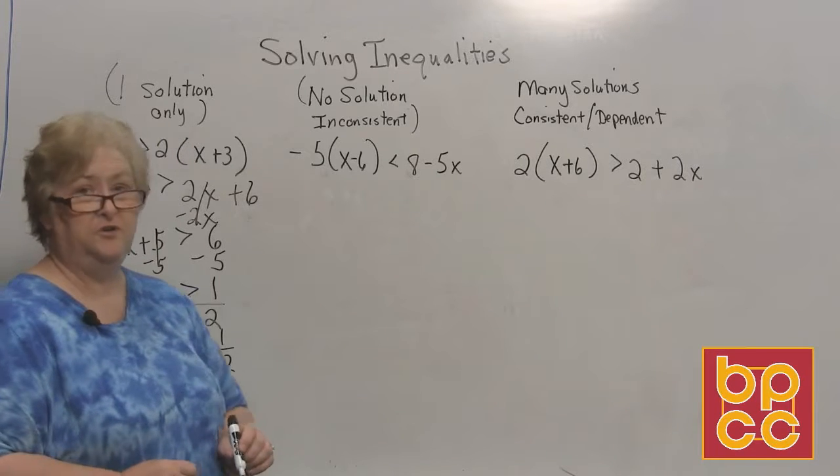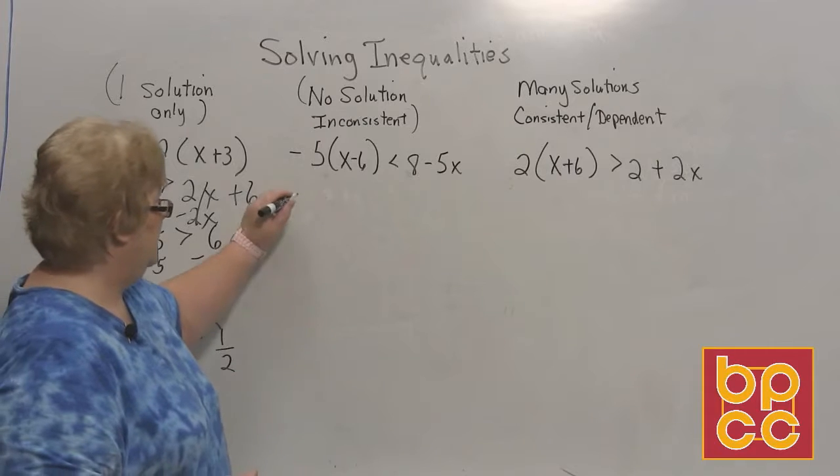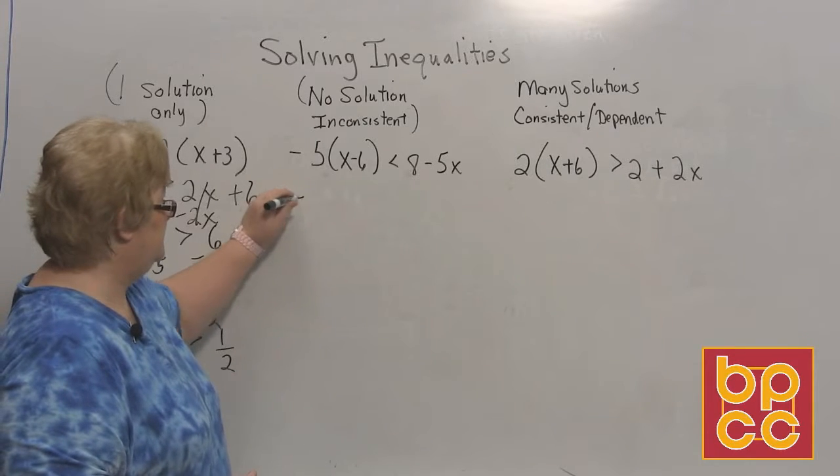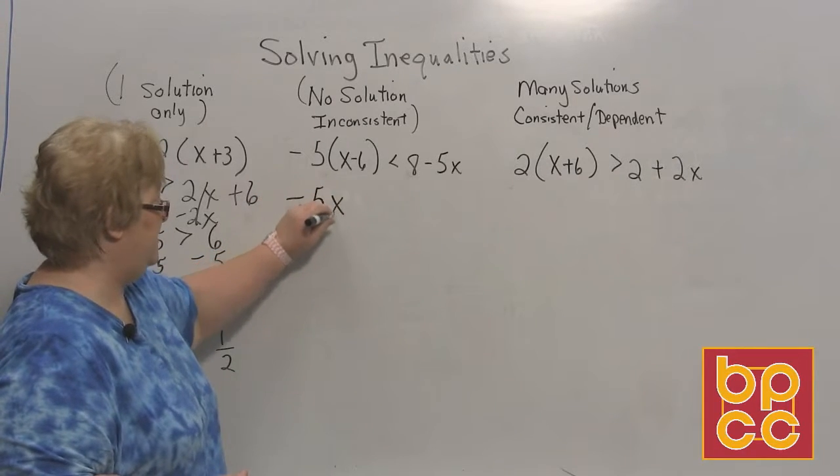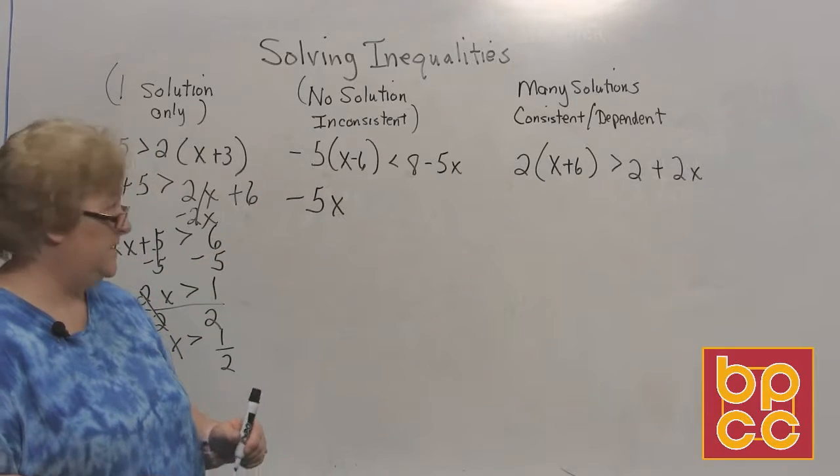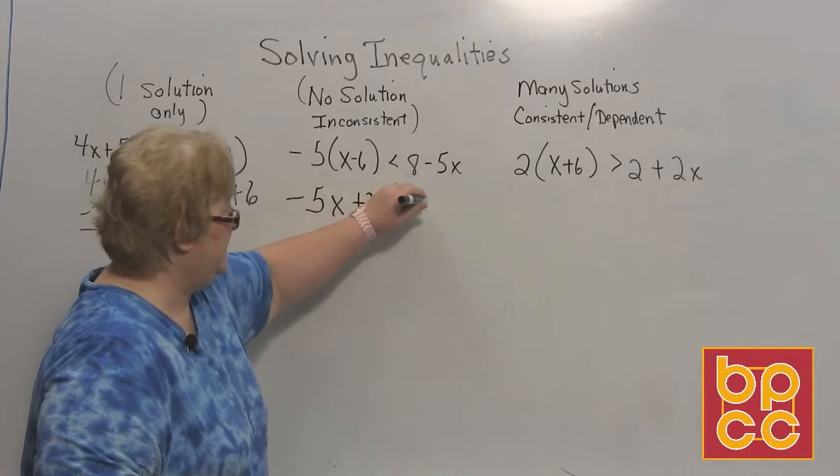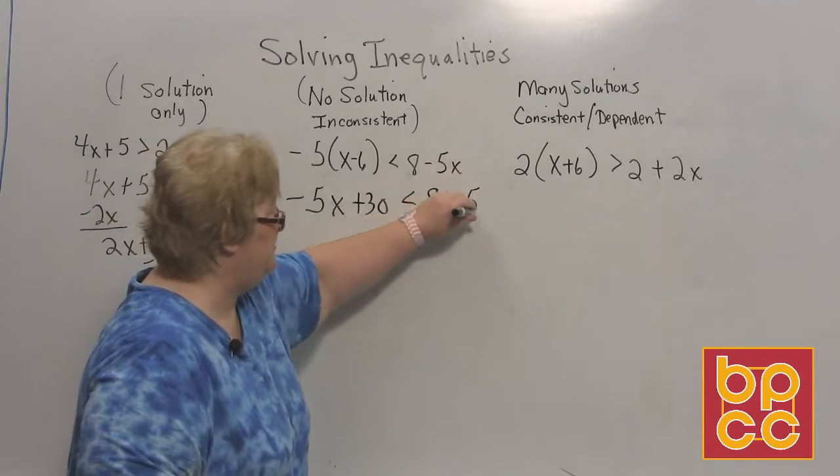On this one, it looks like we're going to distribute first and then we'll see what happens after that. A negative 5 times x is a negative 5x and a negative times a negative, 5 times 6, 2 negatives make a positive, plus 30 is less than 8 minus 5x.